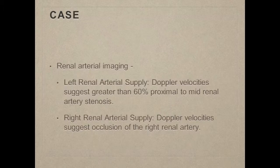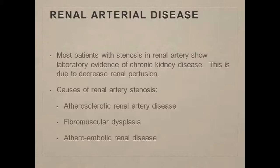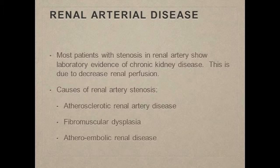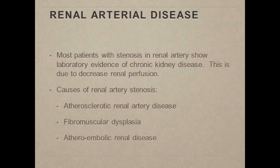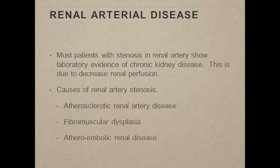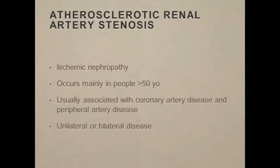The question posed to us from cardiologists and hospitalists was: do we do a renal angioplasty of the artery, and do we stent this patient because of her presenting complaints? Most patients with renal artery stenosis show laboratory evidence of chronic kidney disease due to decreased renal perfusion. The common causes of renal artery stenosis include atheroembolic disease, fibromuscular dysplasia, and atherosclerotic renal artery disease. Atherosclerotic renal artery disease is most likely unilateral on presentation, whereas fibromuscular dysplasia and atheroembolic disease can very much be bilateral.